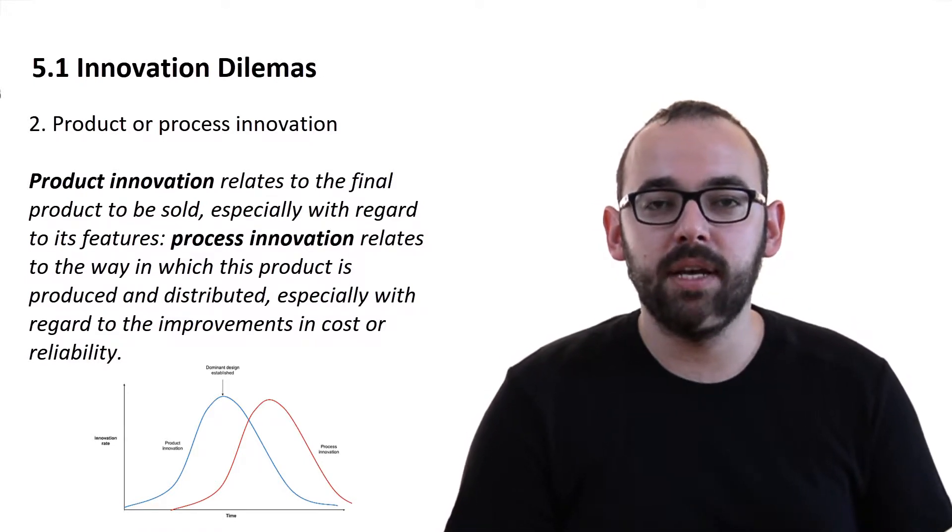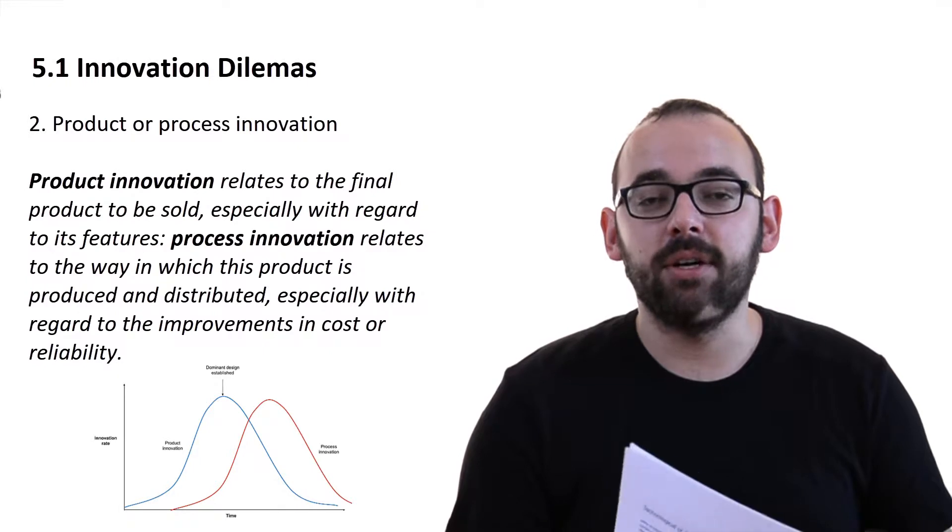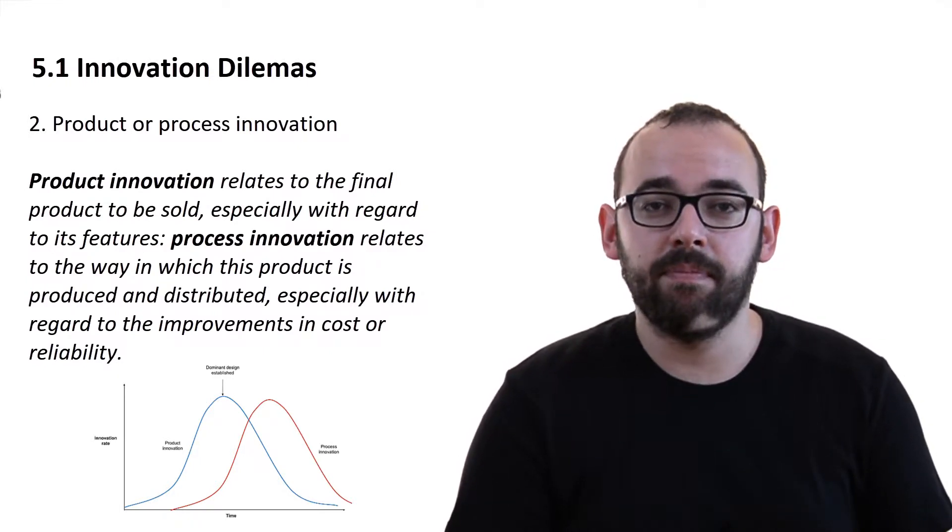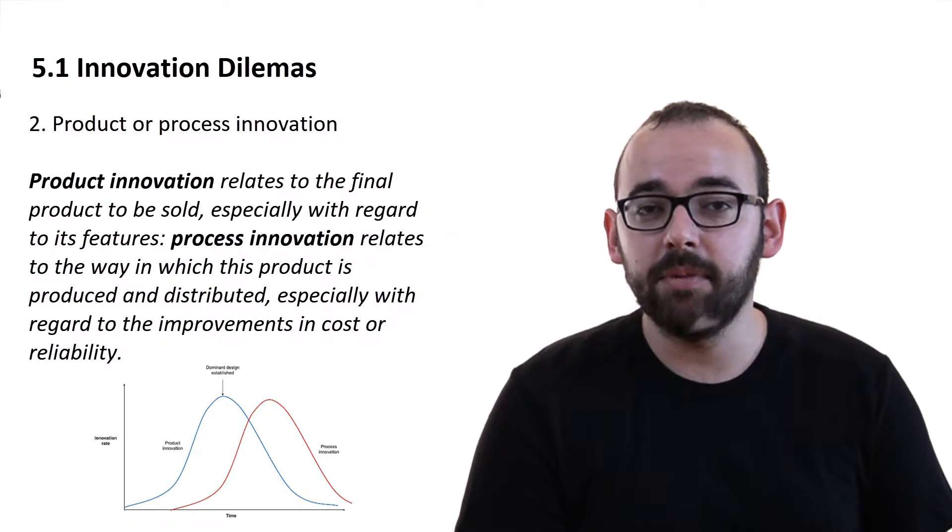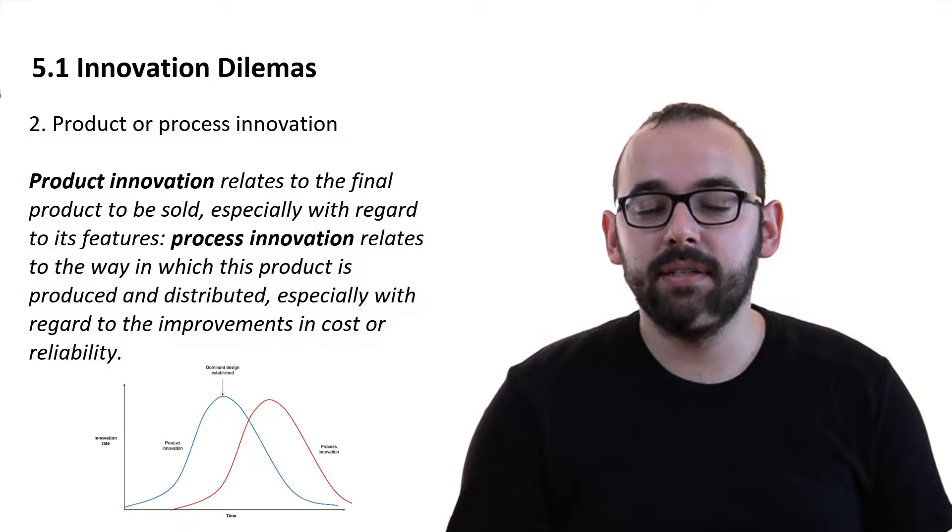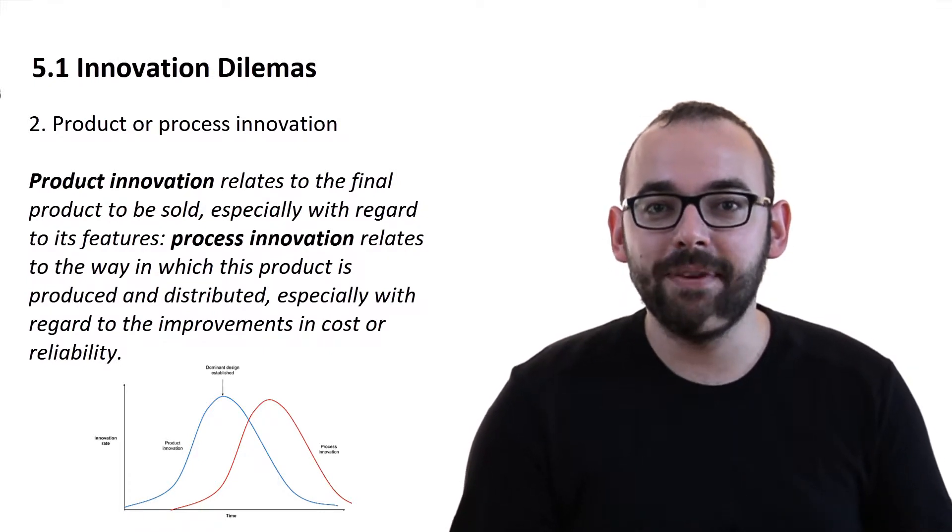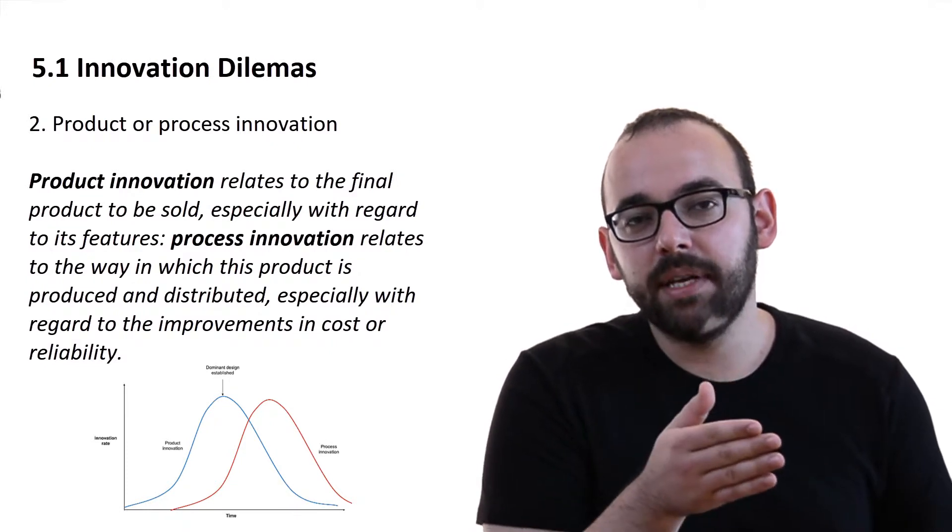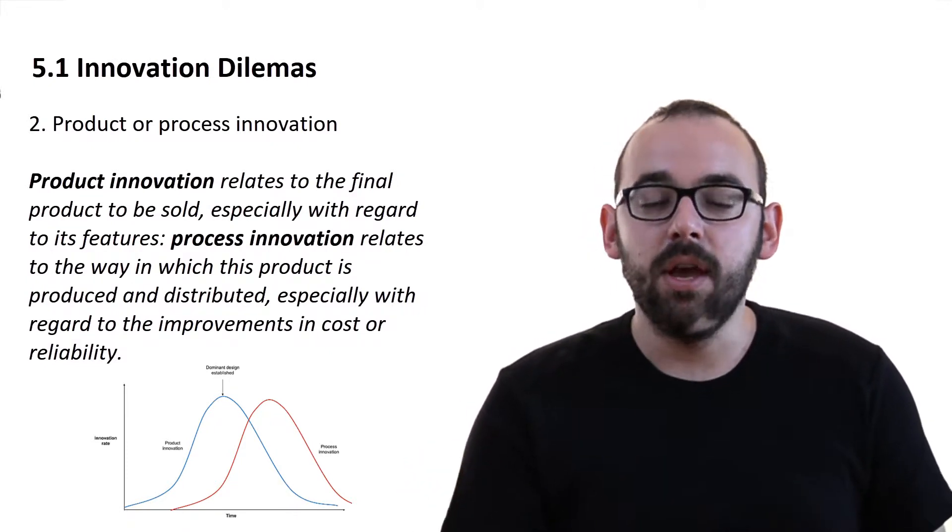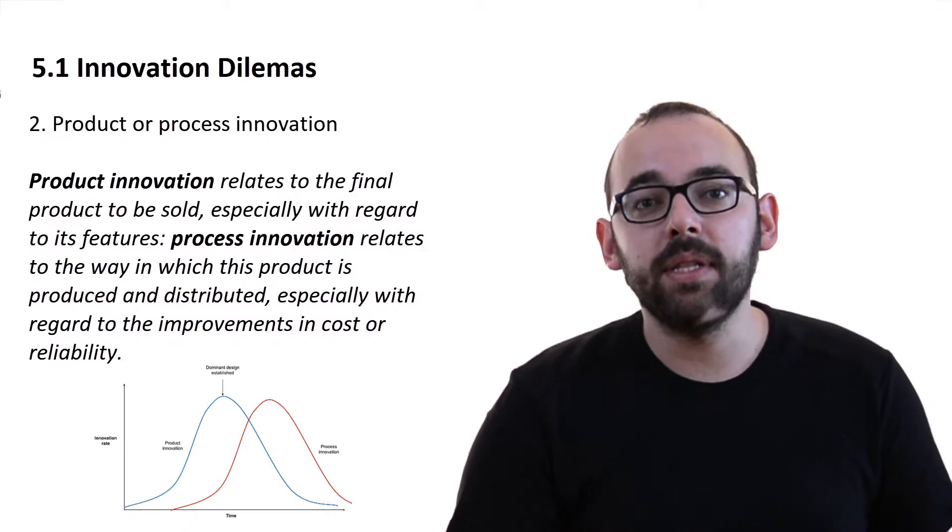Why is there some dominant design established and then the product innovation switches to process innovation? Can we see this in the real world? Of course, we can. Think about the automobile industry. In the earlier 20th century, when there was Henry Ford thinking about his car, his Model T was considered a dominant design establishment in the automobile industry. Before that, there were innovators thinking, should cars have three wheels or four wheels? Should they be powered by petrol or by steam or even by horses?